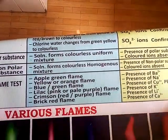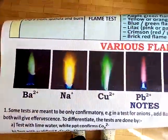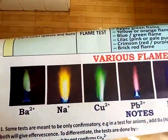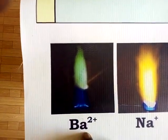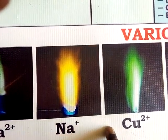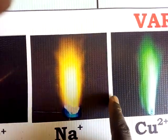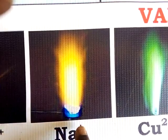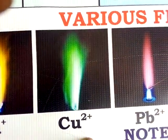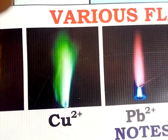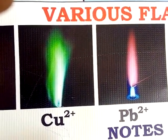Let me show you the various colors. Now look at barium — that is the color of barium. Sodium: that is how it will burn, you can see it is very yellow. What about copper ions? Copper ions will burn like that, and that is the flame you will see, and then in the inference you will write copper ions.